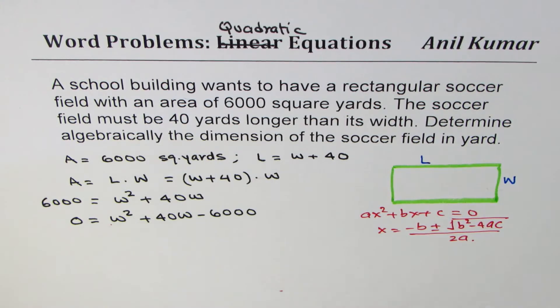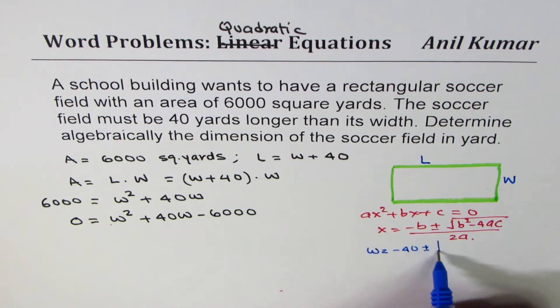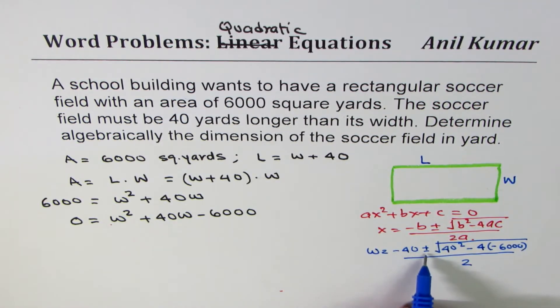So you could solve for W, which is minus 40 plus minus square root of 40 squared minus 4 times minus 6,000 divided by 2. One of the answers will be negative, don't include that. Take the positive answer. This becomes minus minus, so that is one way of doing it.